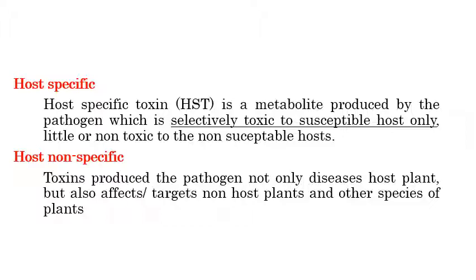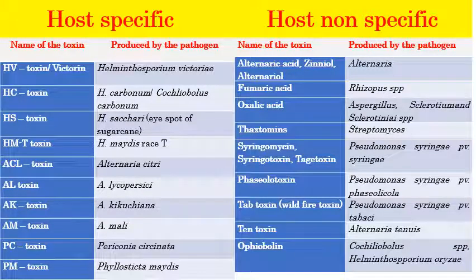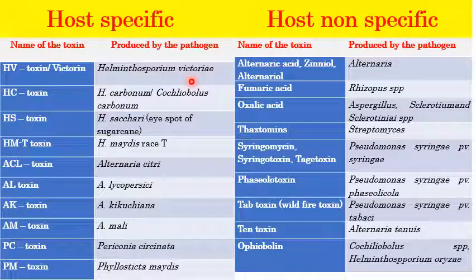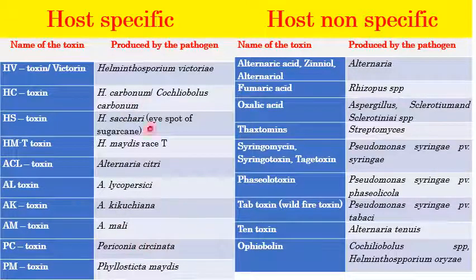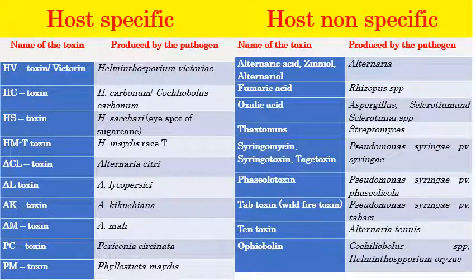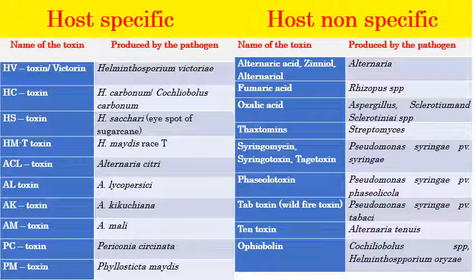Examples of host-specific toxins include HV toxin (victorin) produced by Helminthosporium victoriae, HS toxin, HMT toxin, ACL toxin, and AL toxin. The corresponding plant pathogens that produce these toxins are also listed. Examples of host non-specific toxins include alterneric acid, fusaric acid, oxalic acid, syringomycin, tabtoxin, tentoxin, and fasciatoxin — all produced by different plant pathogens.